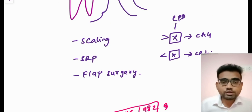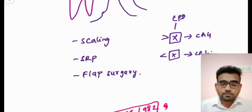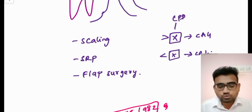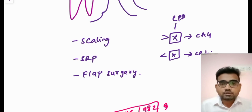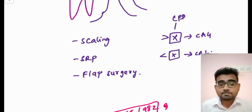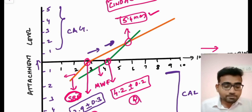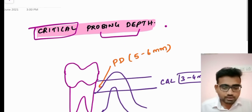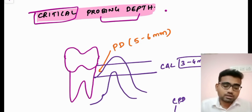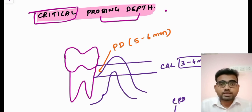I will post videos on small concepts in periodontics at least two to three times a week, not more than five to six minutes each, so it will be easy for you to revise whenever you are free or relaxing. Get these concepts in your mind. Revision is very important — keep reading, keep away distractions, follow your timetable. If you find this video helpful, do share it with your friends. Thank you for watching — we will meet in another video.